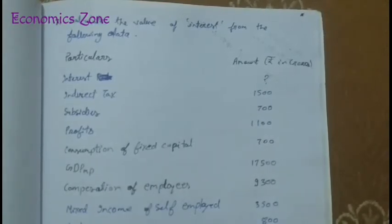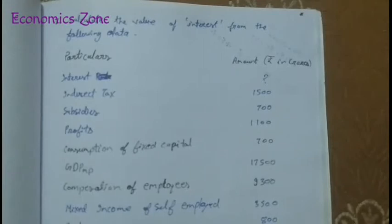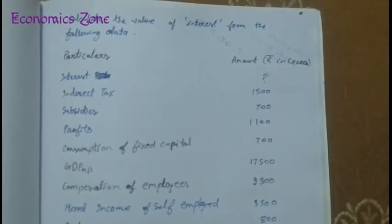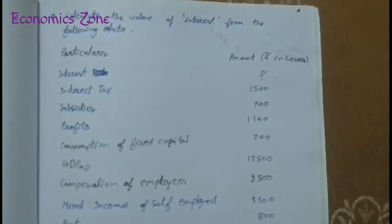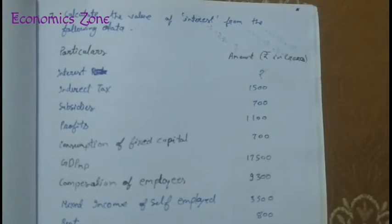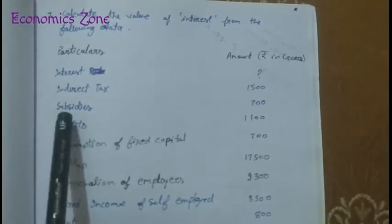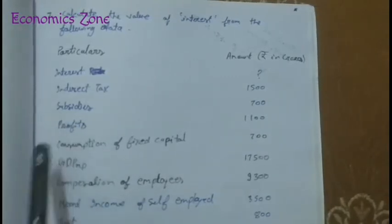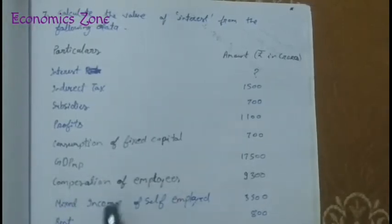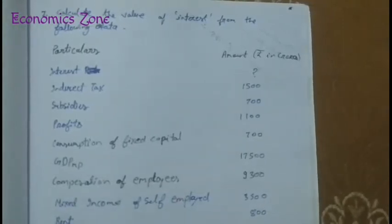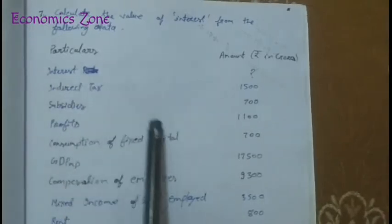First we should identify which formula to use for this question. This is a question of the income method. Why? Because compensation of employees, subsidies, profit, mixed income, and the components of rent — these are all parts of the income method.